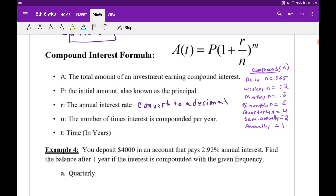n is the number of times interest is compounded per year. The interest you get is divided out throughout the year, and there's different divisions. Here's some of them listed out: we got daily, weekly, monthly, bimonthly, quarterly, semi-annually, and annually.